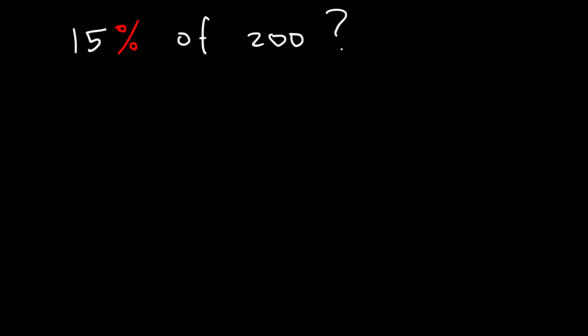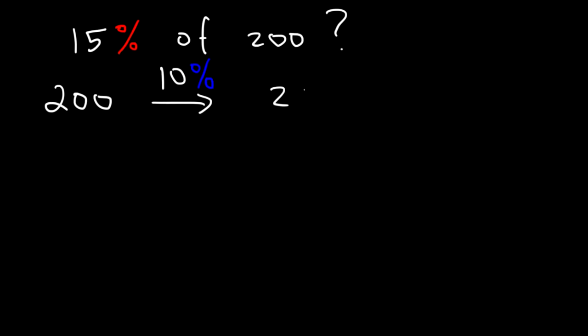Here's the first question: what is 15% of 200? How can we find the answer mentally? First, ask yourself what is 10% of 200. To find 10% of a number, simply move the decimal one unit to the left. So 10% of 200 is 20.